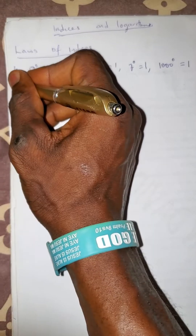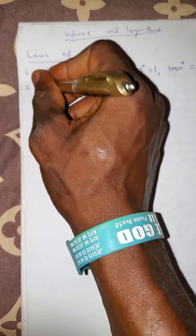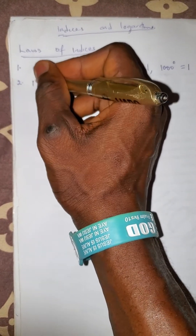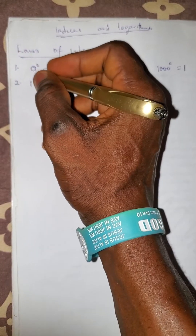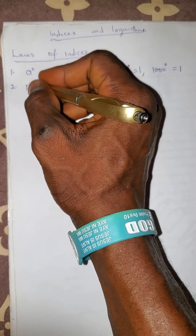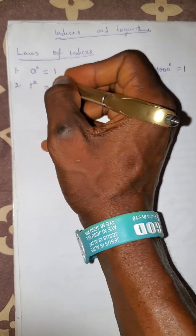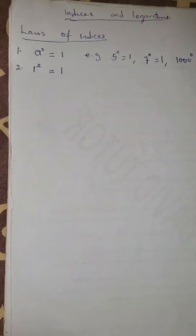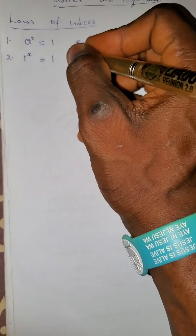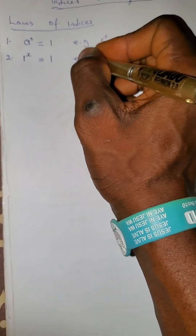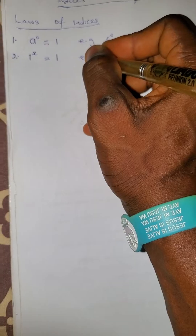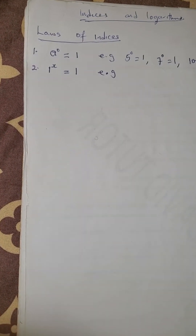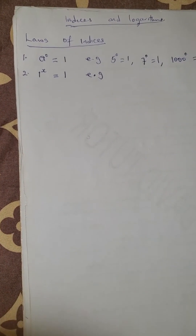Number 2: if you have 1 raised to the power x, it equals 1. That is, 1 raised to any power equals 1. So 1 raised to power x is always equals to 1.